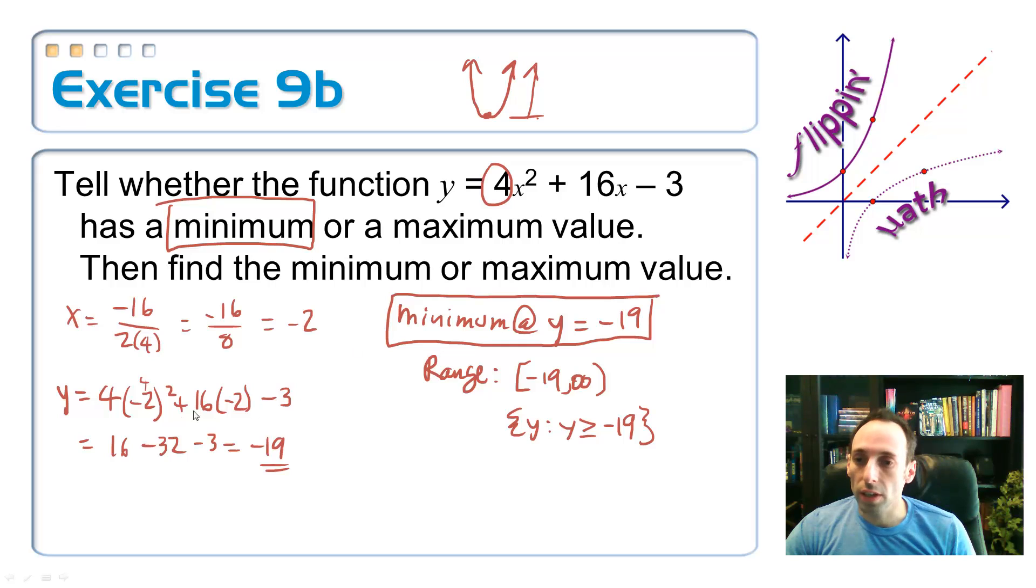Take the x-coordinate, stick it back into the equation, and then do some math and get -19. So we have our minimum value at y = -19, and we can use that to come up with our range values, that it has to be greater than or equal to -19.